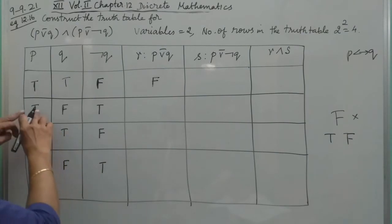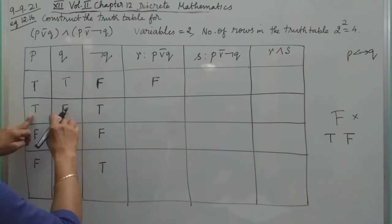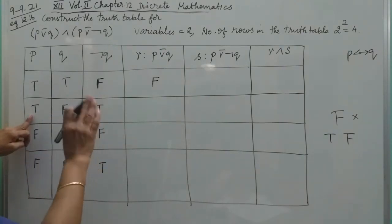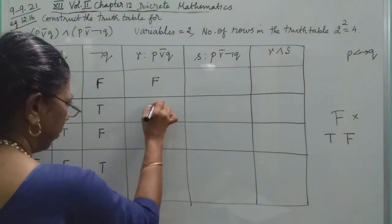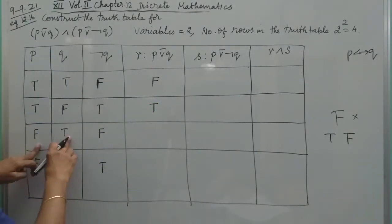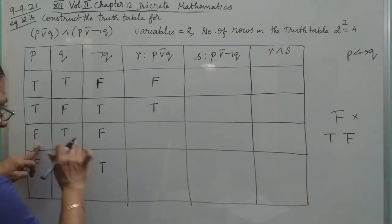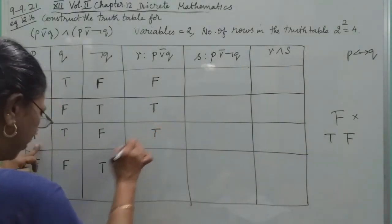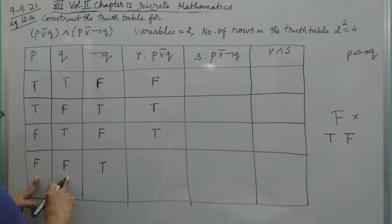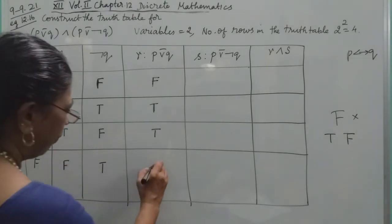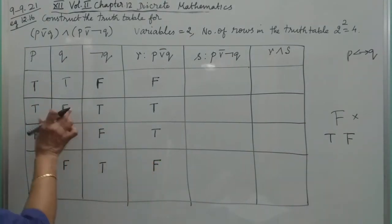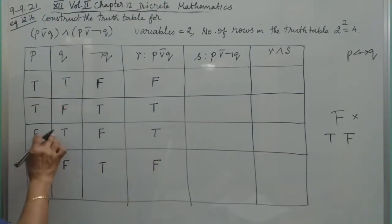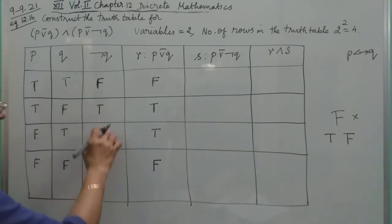Here the values are T and T — that gives false. If you have one T and one F, you can get T. If values are the same — same truth — we will get false. If we look at the two different values, we will get true. So now we complete the first bracket column.